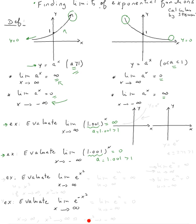Now what about e to the x? Remember, e is about 2.72, so it's bigger than 1. Since it's bigger than 1, the graph of y equals e to the x behaves the same way. So the limit of e to the u as u goes to positive infinity is always positive infinity, and the limit of e to the u as u goes to negative infinity is always 0, because e is bigger than 1.